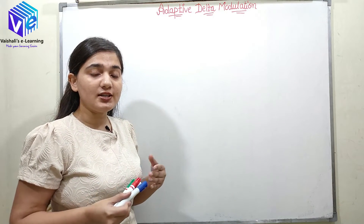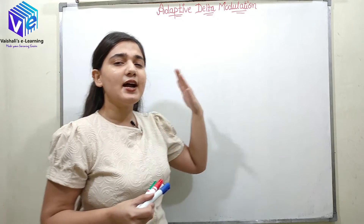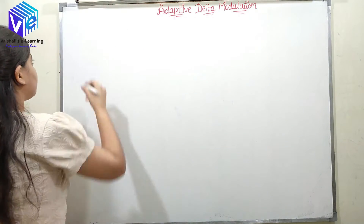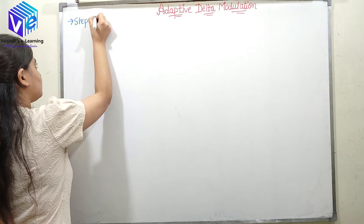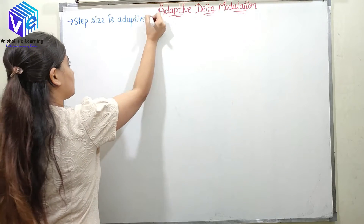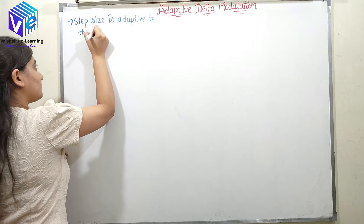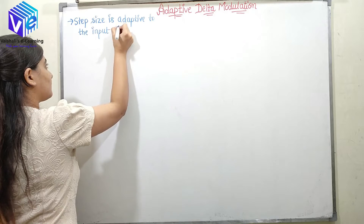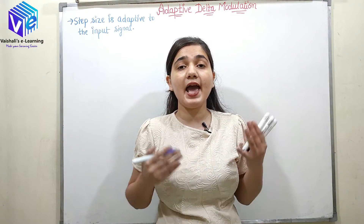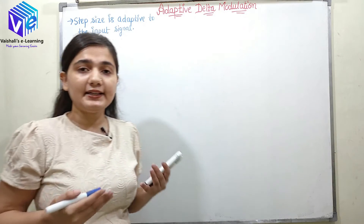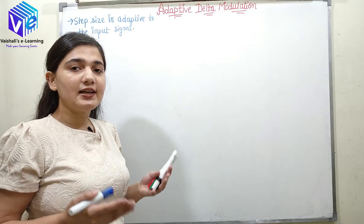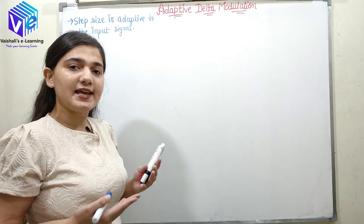In the adaptive delta modulation, the step size is adaptive to the input message signal. If my message signal has higher slope, the step size would be large, and when the message signal has less slope, the step size would be less.